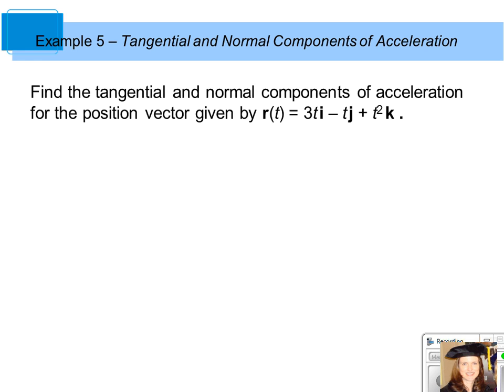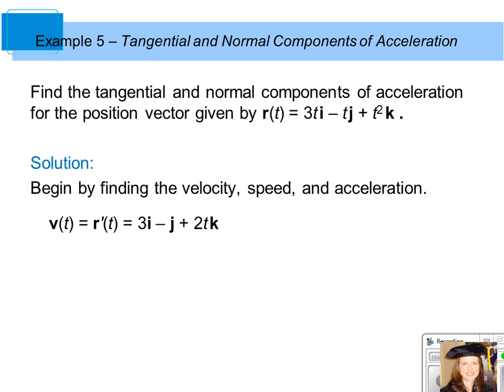In this example, we're going to find the tangential and normal components of acceleration for the position vector given by r of t equals 3t i minus t j plus t squared k. The solution is found by finding the velocity, speed, and acceleration of the vector valued function.